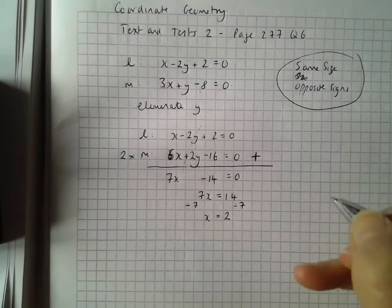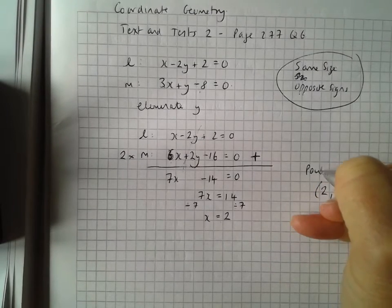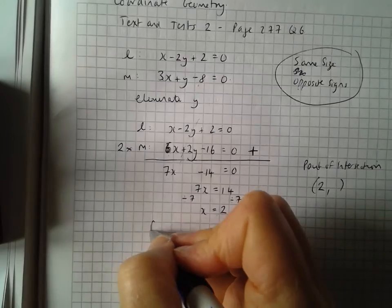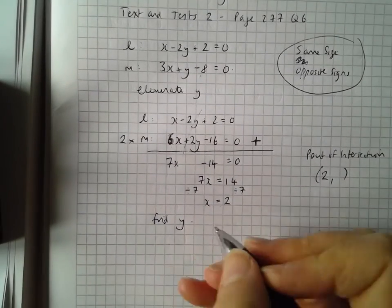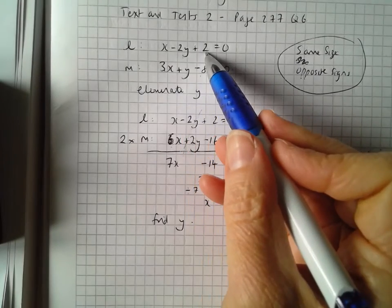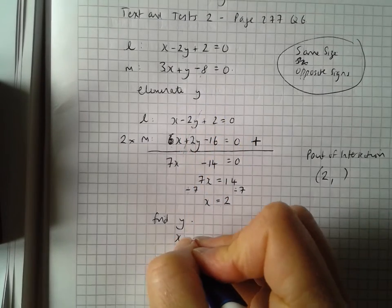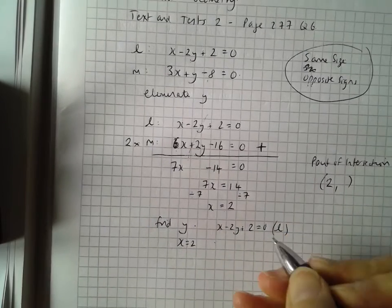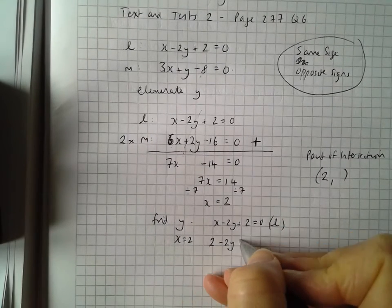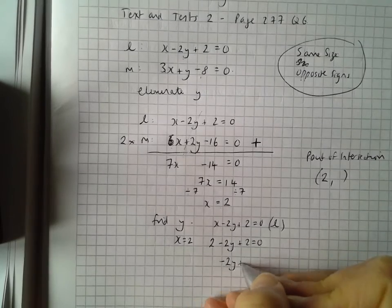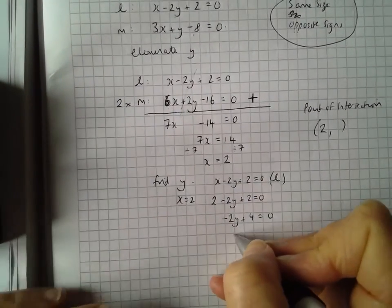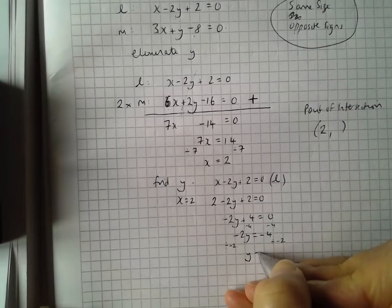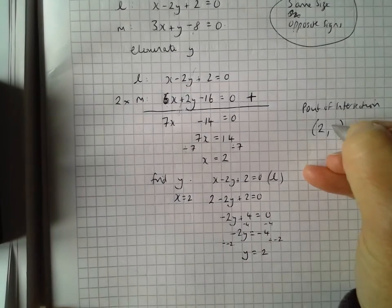I now know x is 2, so I know one part of my answer. This is the point of intersection. Now I've got to find y. Going back, I know that x minus 2y plus 2 equals 0. When x is equal to 2, substituting into equation L: 2 minus 2y plus 2 equals 0. Minus 2y plus 4 equals 0, so minus 2y equals minus 4. Dividing both sides by minus 2, y is equal to 2. So my point of intersection is (2, 2).